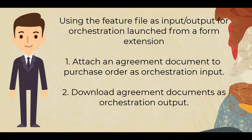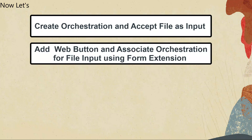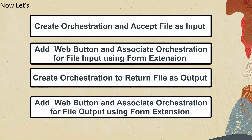In this tutorial, let's consider a scenario in which we want to make it easy for users to attach an agreement document to a purchase order and download a file as output for an orchestration launched from a form extension. For this scenario, you will create an orchestration that accepts file as input to create a purchase order and add input files to it as an attachment. When you click the web button, provide file as input to the orchestration. Create another orchestration to return the purchase order attachment file as output. Add a web button and associate the orchestration using form extension. On clicking the web button, the orchestration will be executed and returns the file attachments to download to your local desktop.